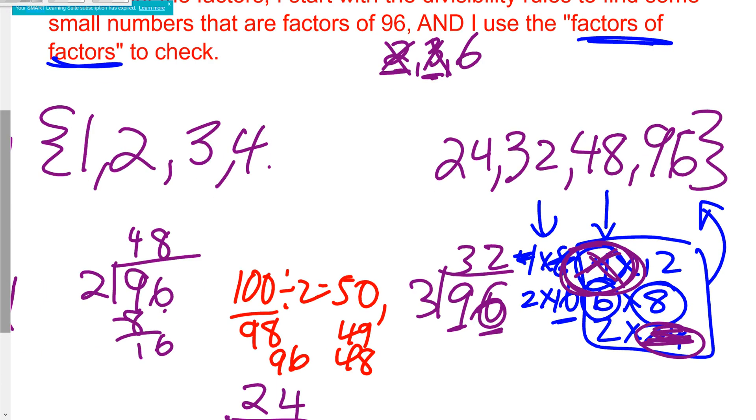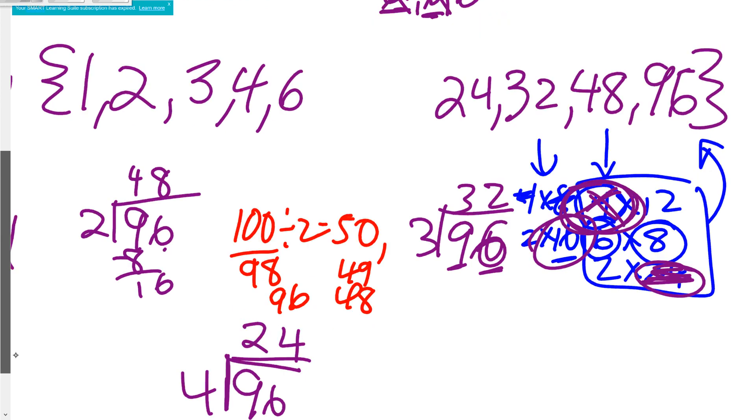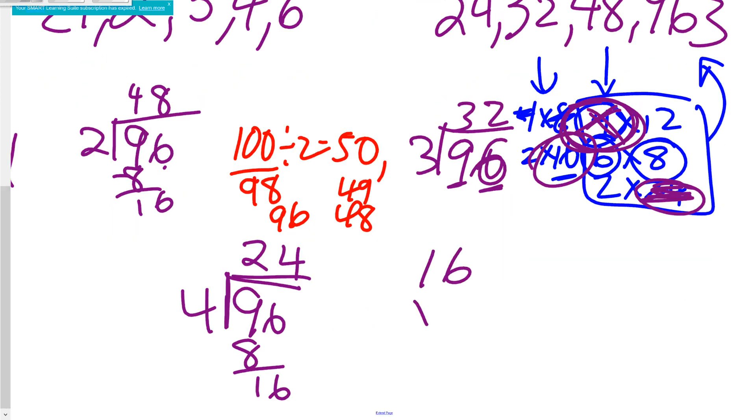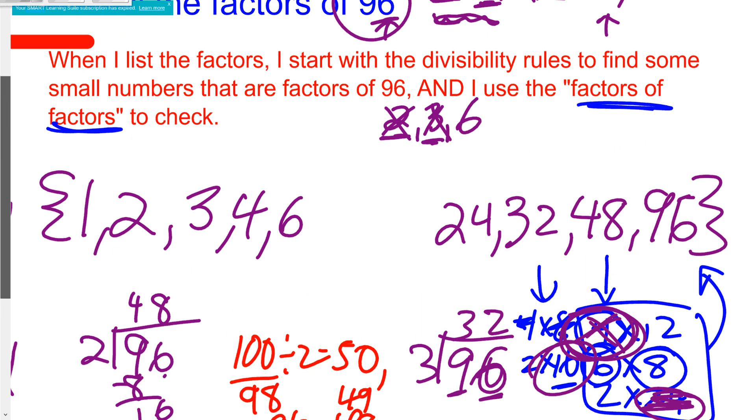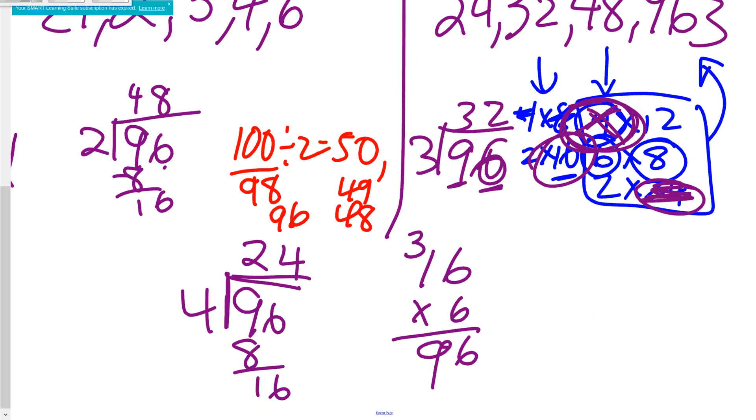Now I know 6 will work. Okay, now I see some other numbers. I see 16 here, I'm kind of wondering if 16 might be the right thing. So I'm going to do 16 times 6 and see if that is 96. 6 times 6 is 36, 6 times 1 is 6 plus 3 is 9. Oh look, it did work! So it's 6 and 16.